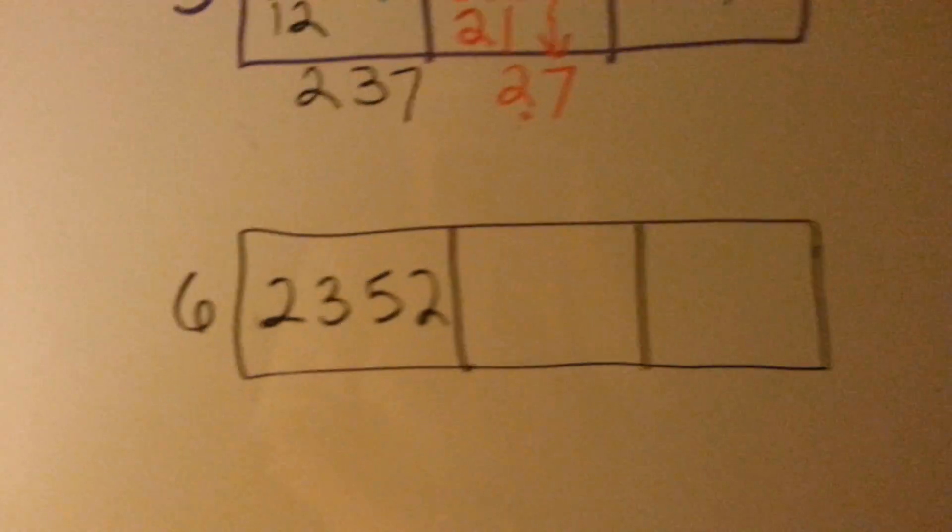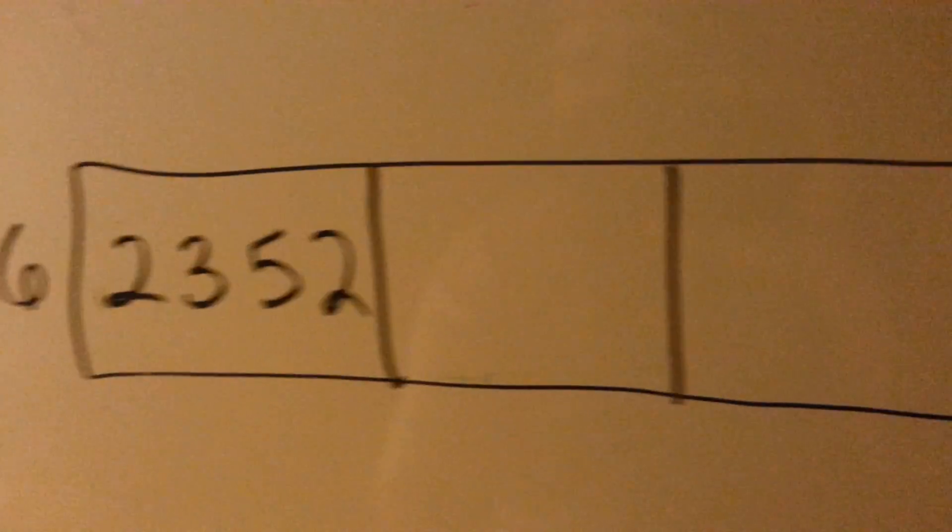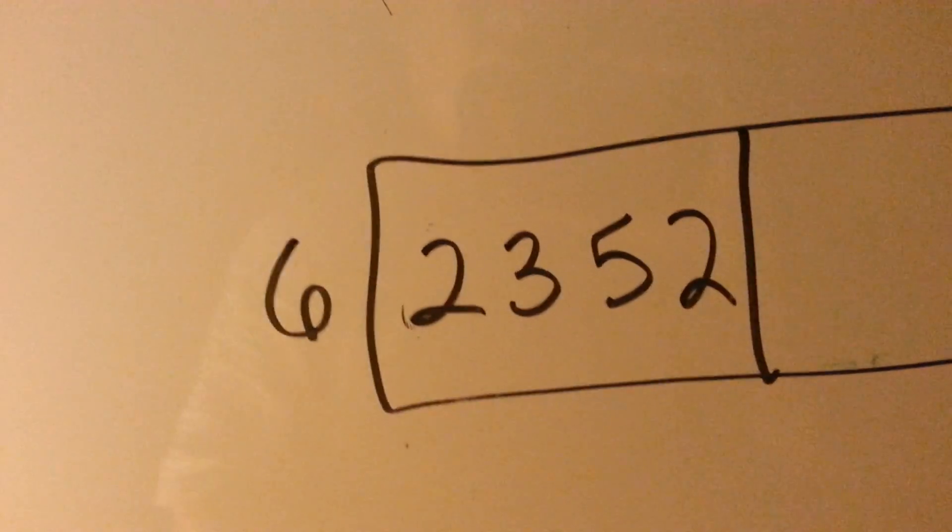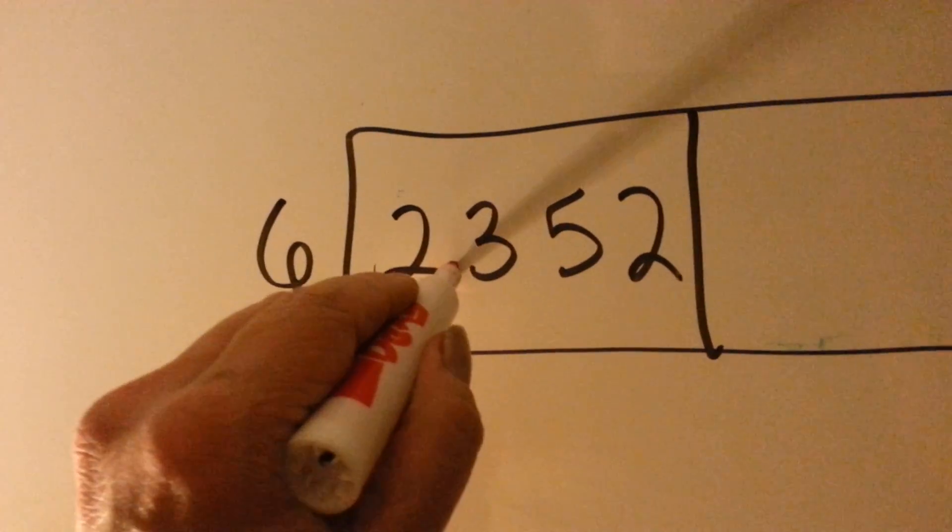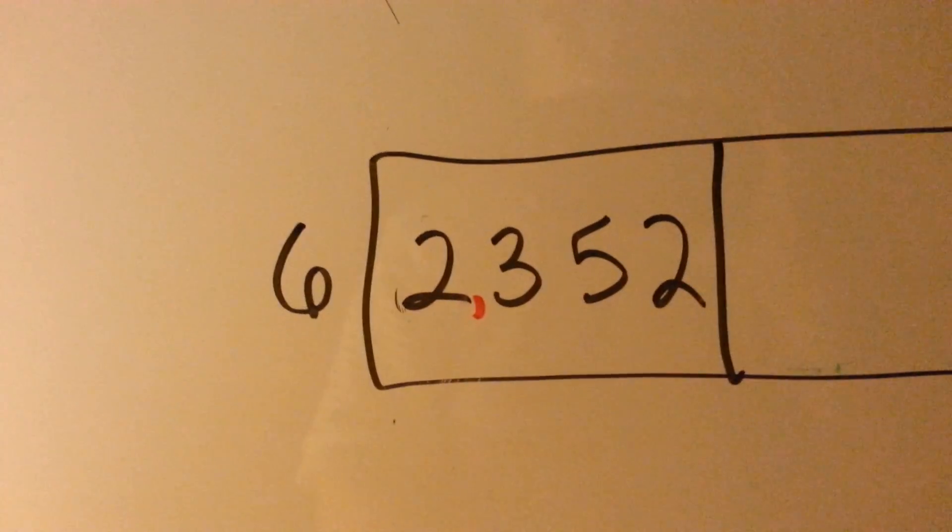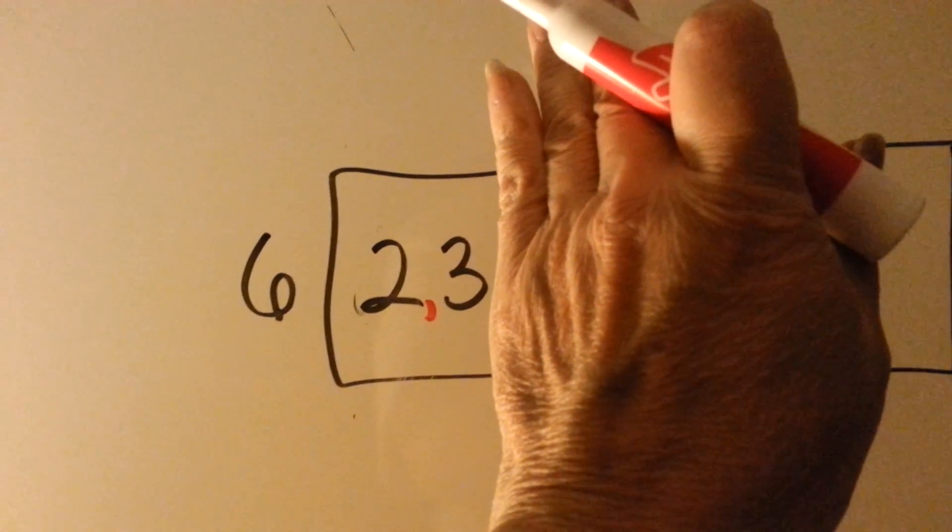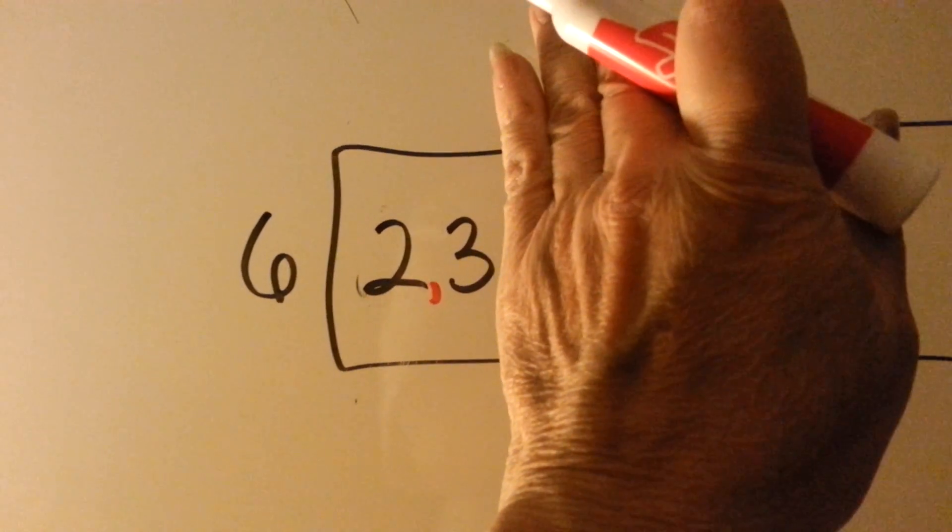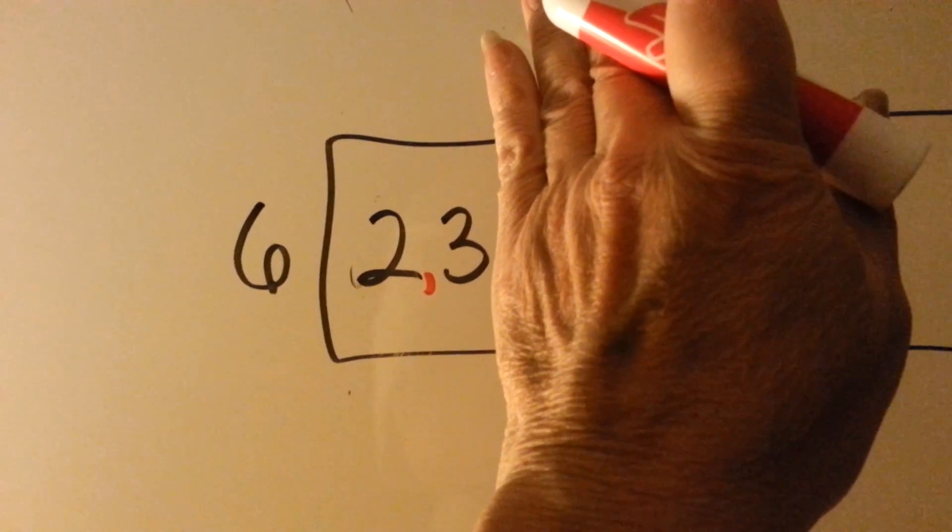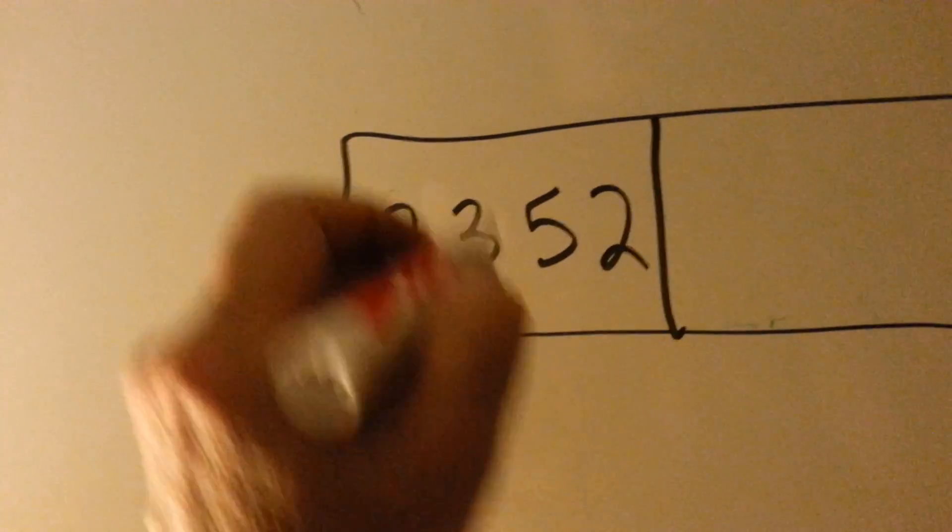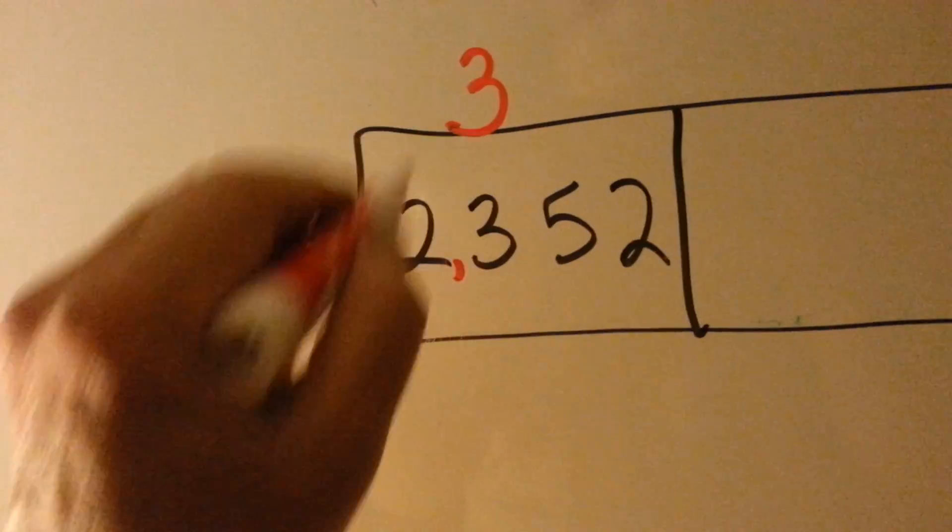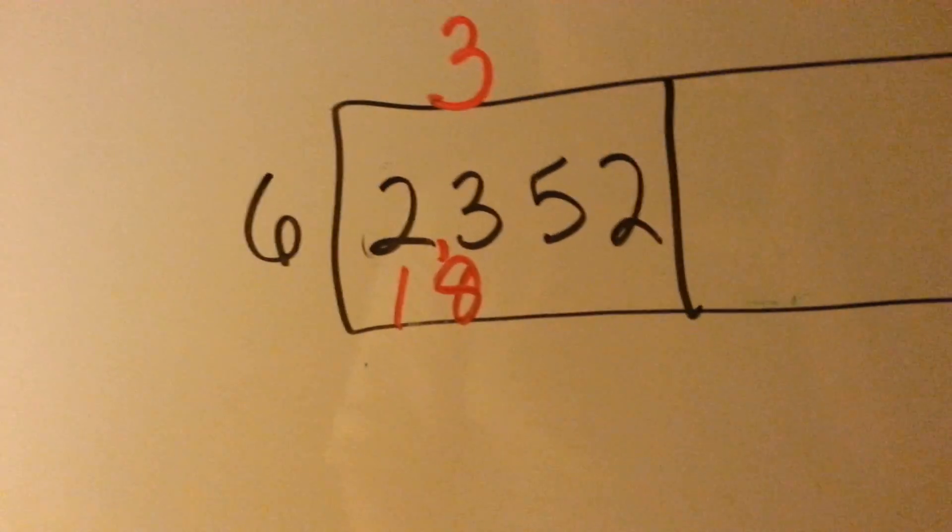Let's try a bigger one, okay? So, we've got 6, and we want to try to put it into 2,352. So can 6 fit into 2? No. Can it fit into 23? Yes. 6 times 4 is 24. That's too big. So let's go 6 times 3. 6 times 3 is 18.